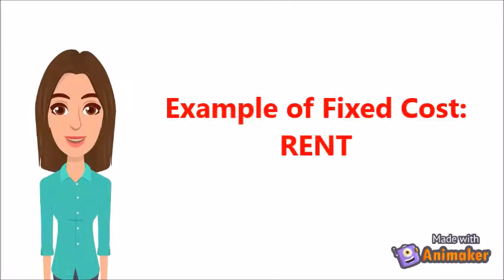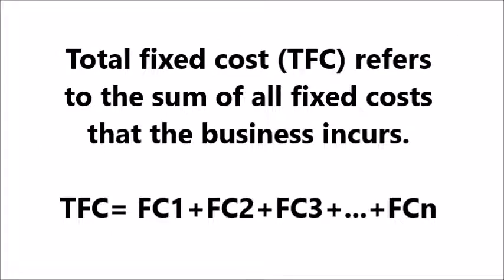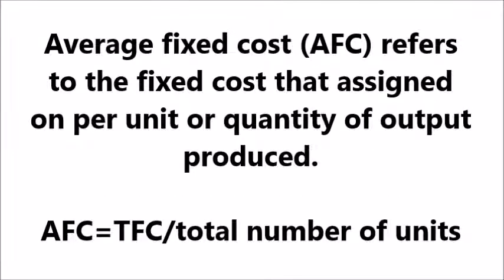So rent is one example of a fixed cost. Other examples include insurance, property taxes, salaries unrelated to production such as management, production equipment, and office furniture. A total fixed cost refers to the sum of all fixed costs that the business incurs. On the other hand, the average fixed cost refers to the fixed cost assigned on a per unit or quantity of output produced.